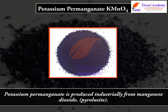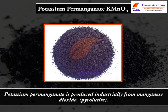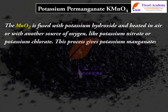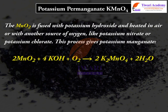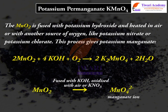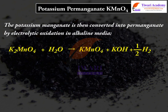Potassium permanganate is produced industrially from manganese dioxide (pyrolusite). MnO₂ is fused with potassium hydroxide and heated in air, or with another source of oxygen like potassium nitrate or potassium chlorate. This process gives potassium manganate: 2MnO₂ + 4KOH + O₂ → 2K₂MnO₄ + 2H₂O. The potassium manganate is then converted into permanganate by electrolytic oxidation in alkaline media.